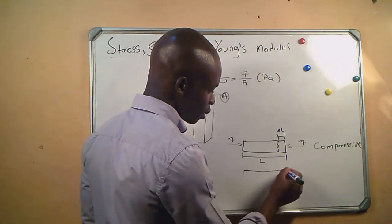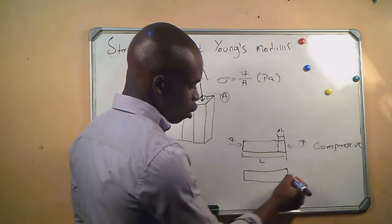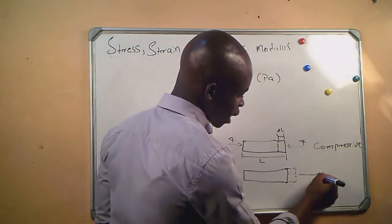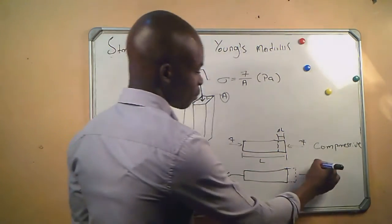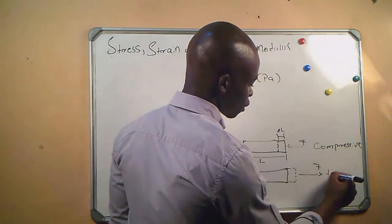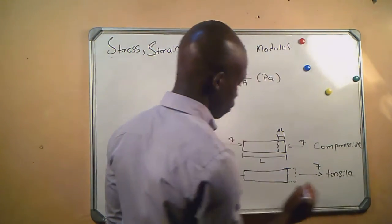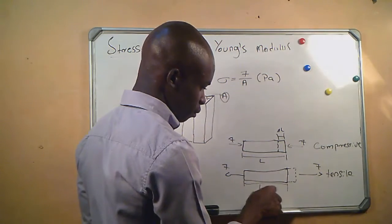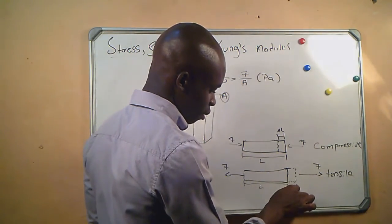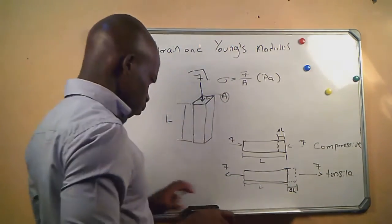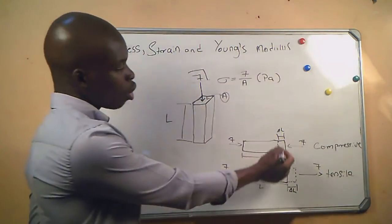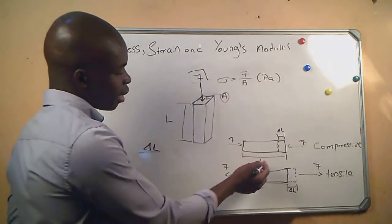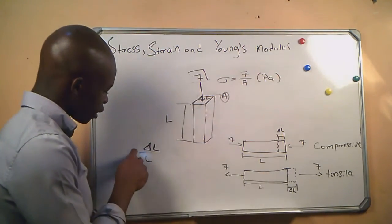Another scenario is a force which is trying to stretch the beam — we call this a tensile force. With the original length as reference, we also get a change in length. The ratio of the change in length divided by the original length is called strain.